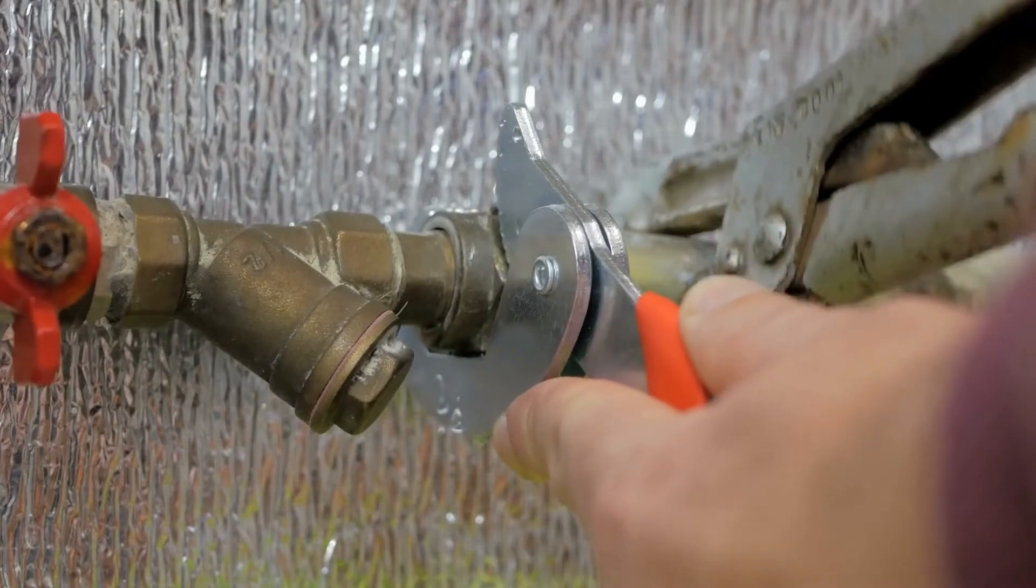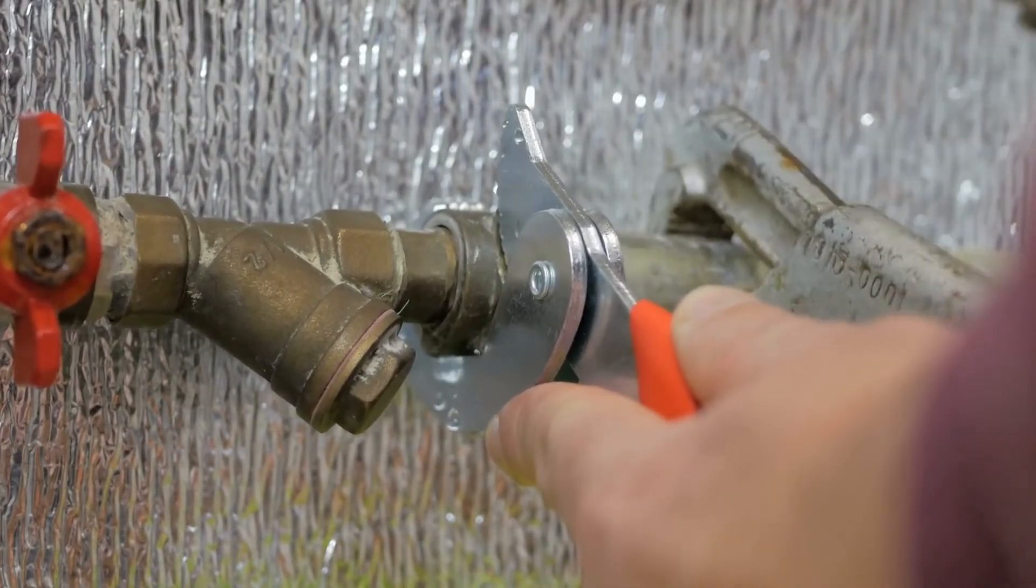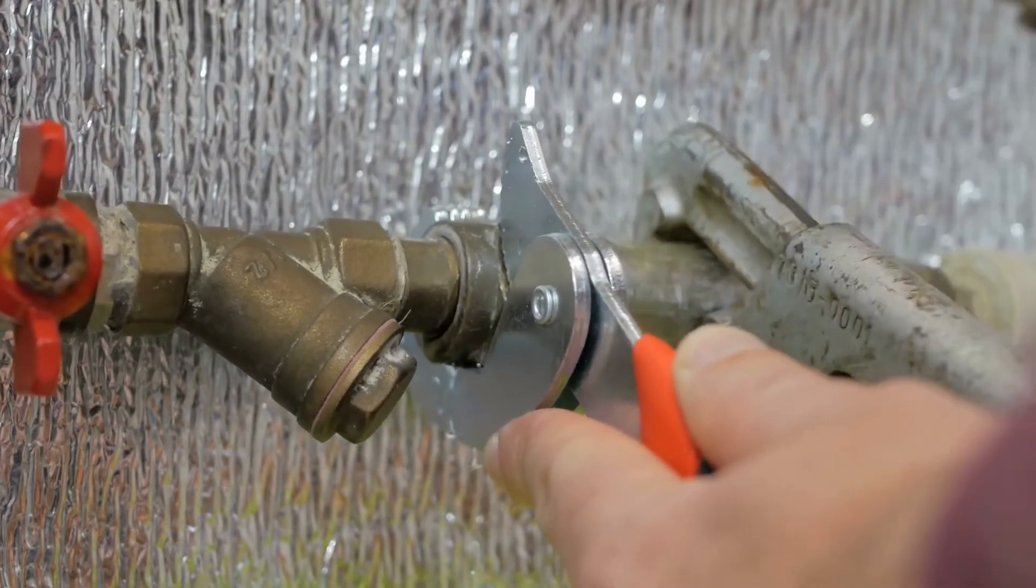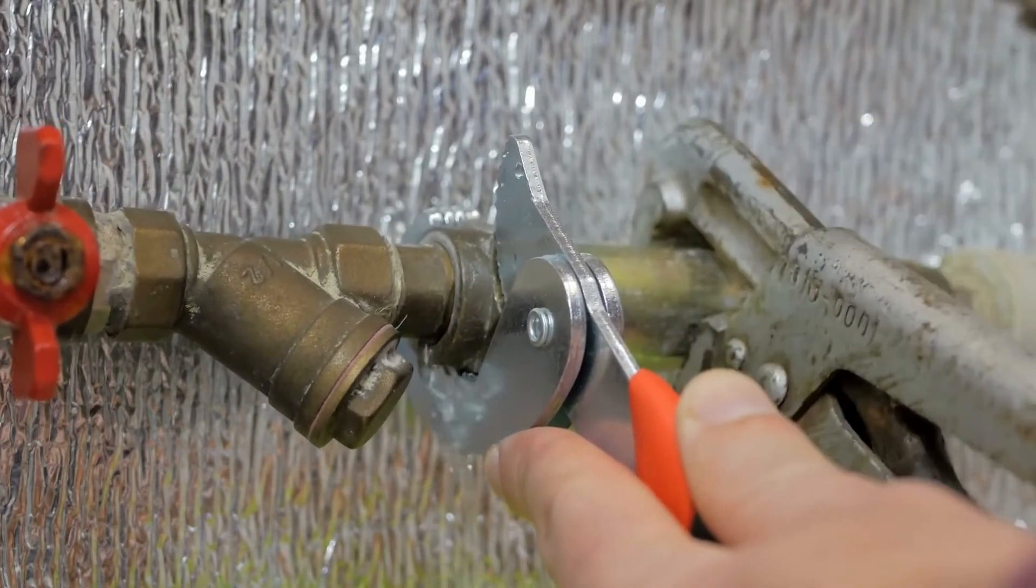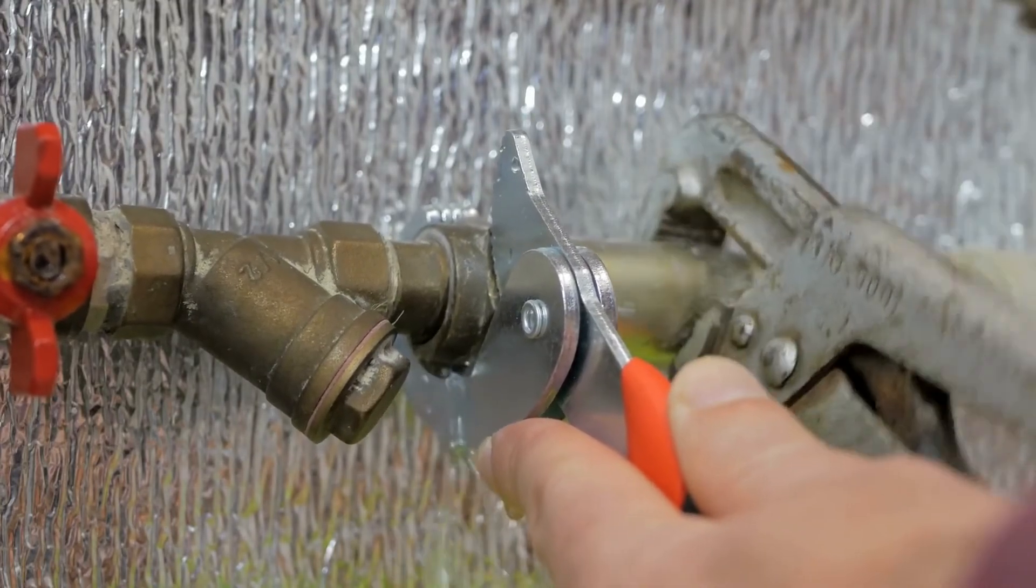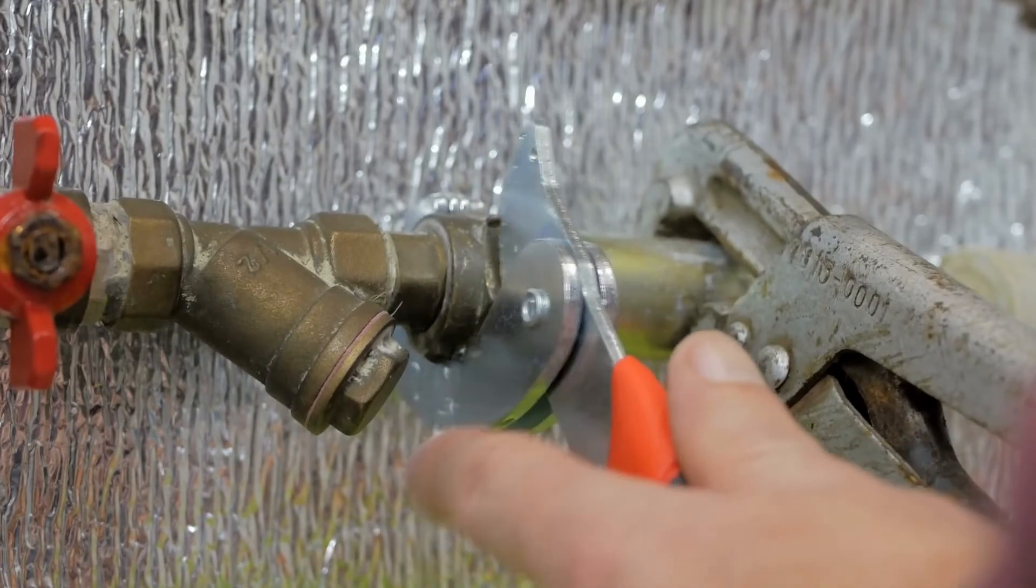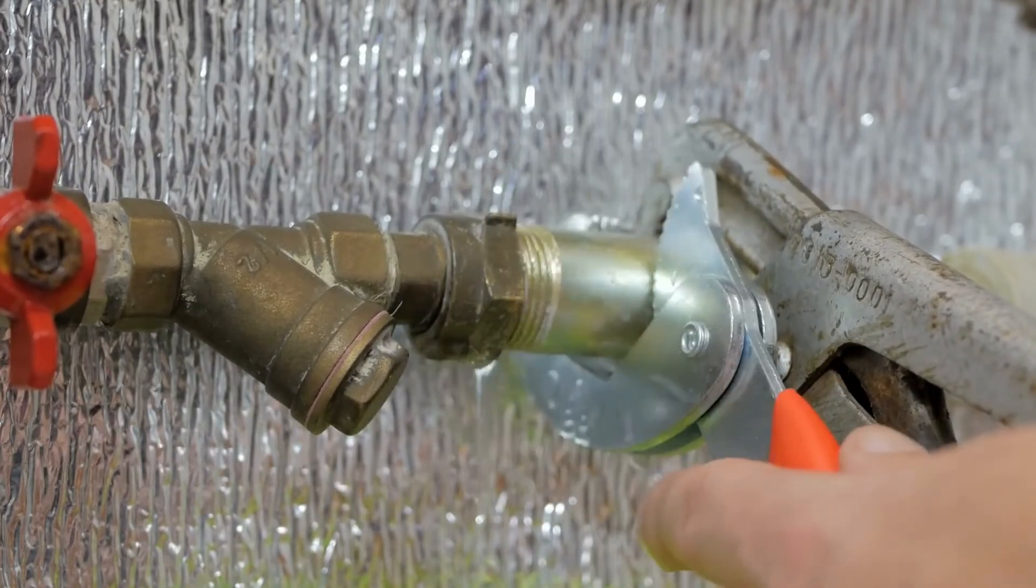In conclusion, I hope these insights and lessons have provided you with valuable information on removing calcium buildup from PVC pipes. Remember to choose the approach that suits your needs and seek professional assistance when necessary. With the right knowledge and techniques, you can keep your PVC pipes free from calcium deposits and ensure the smooth functioning of your plumbing system.